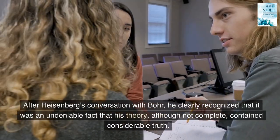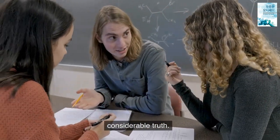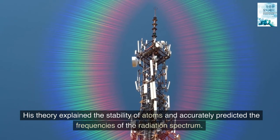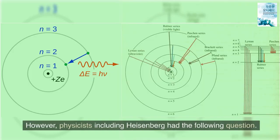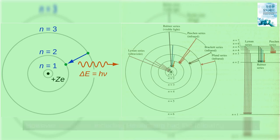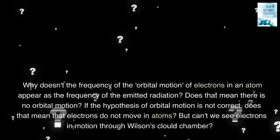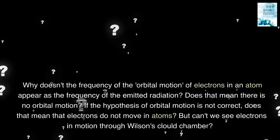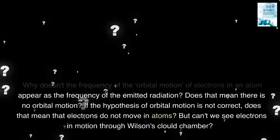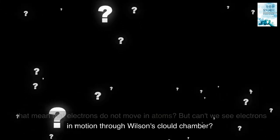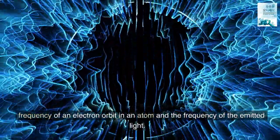After Heisenberg's conversation with Bohr, he clearly recognized that it was an undeniable fact that his theory, although not complete, contained considerable truth. His theory explained the stability of atoms and accurately predicted the frequencies of the radiation spectrum. However, physicists including Heisenberg had the following question. Why doesn't the frequency of the orbital motion of electrons in an atom appear as the frequency of the emitted radiation? Does that mean there is no orbital motion? If the hypothesis of orbital motion is not correct, does that mean that electrons do not move in atoms? But can't we see electrons in motion through Wilson's Claude chamber?